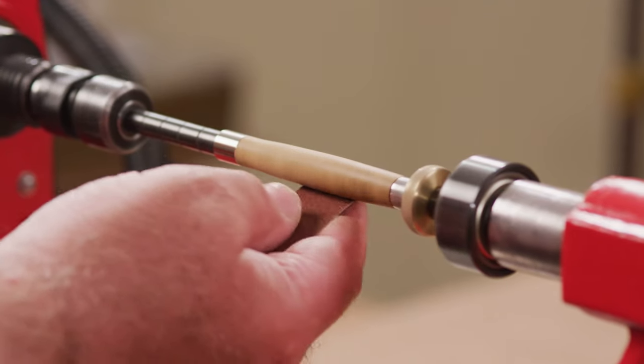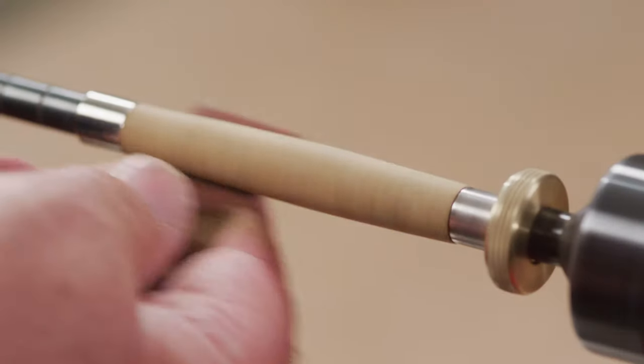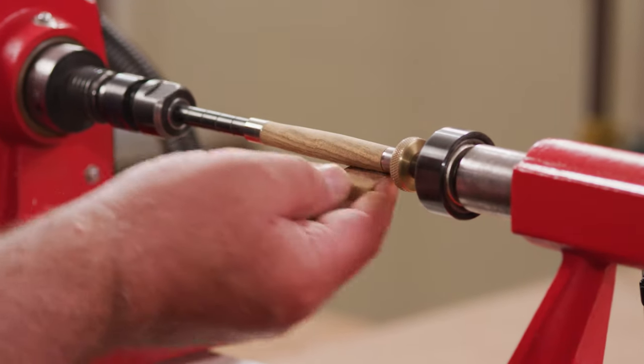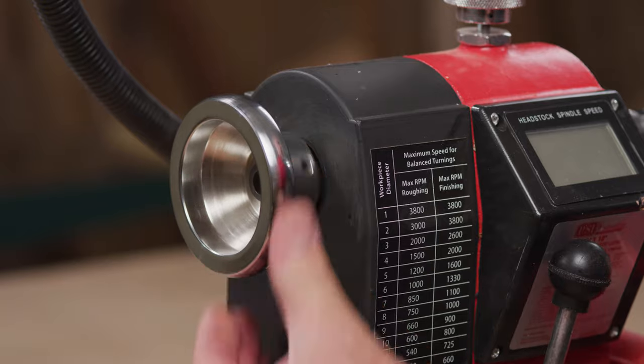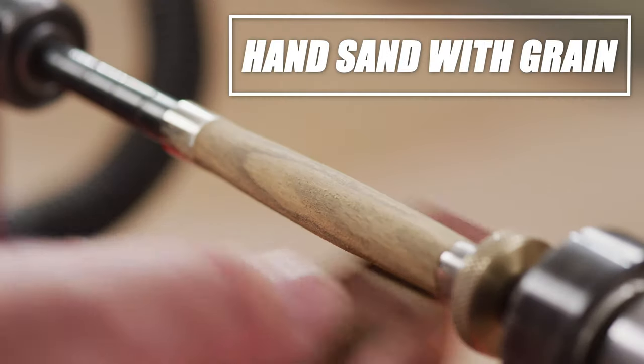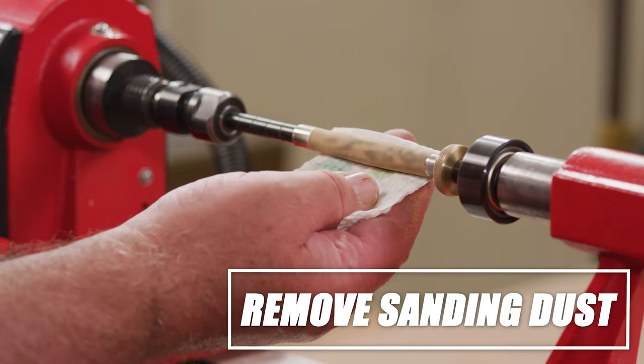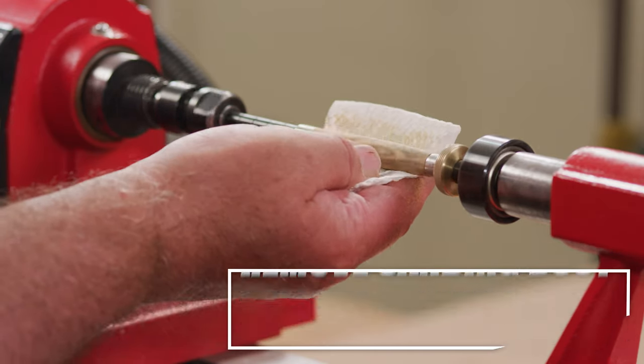These marks are often not visible until you apply the first coat of finish. To prevent this, stop the lathe after each grit and hand sand back and forth or end to end with the grain to remove the circular marks. Sand the length of the blank and wipe off the fine sanding dust with a clean cloth before moving to the next grit.